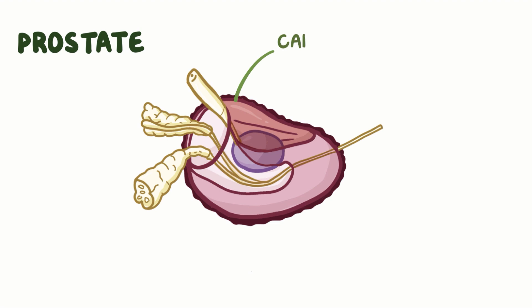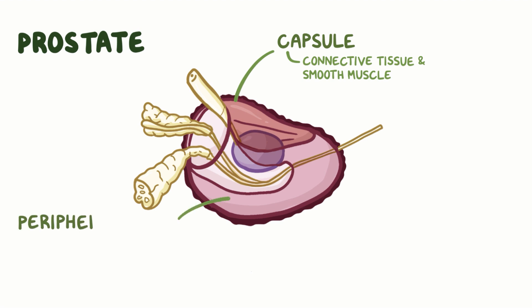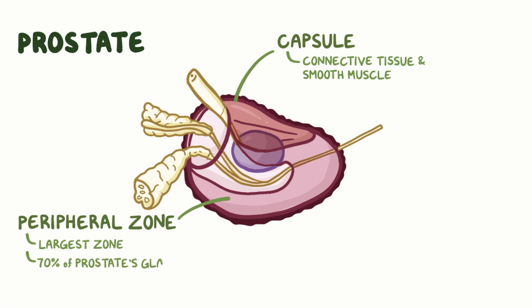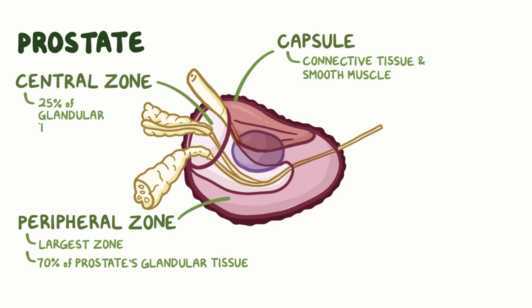The prostate is covered by a capsule of tough connective tissue and smooth muscle. Beneath this layer, the prostate can be divided into a few zones. The peripheral zone, which is the outermost posterior section, is the largest of the zones and contains about 70% of the prostate's glandular tissue. Moving inward, the next section is the central zone, which contains about 25% of the glandular tissue, as well as the ejaculatory ducts that join with the prostatic urethra.